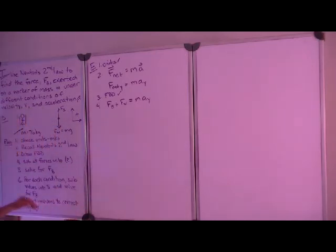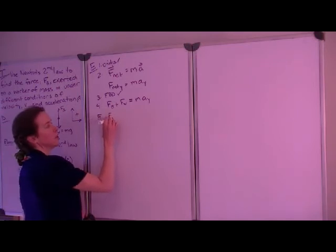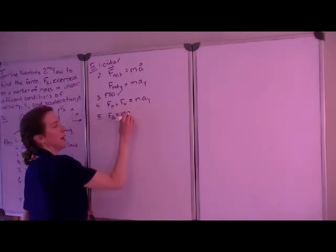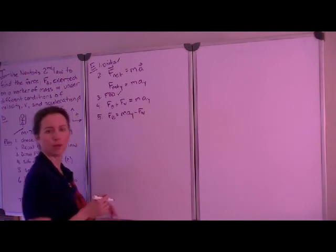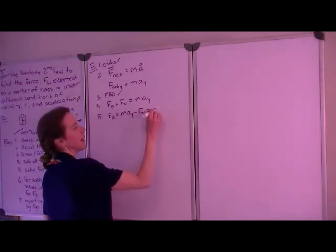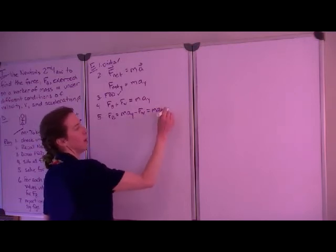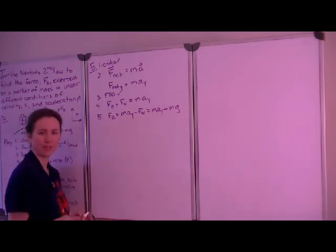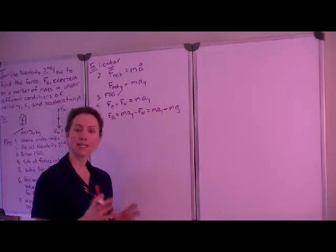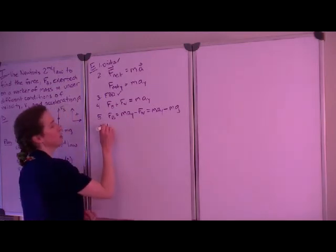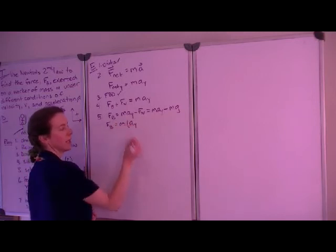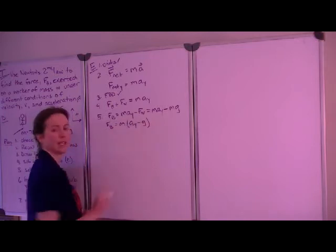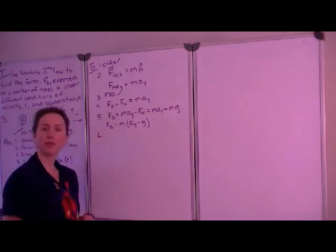Now we want to solve for the force of the bucket on the worker. That is going to be equal to the mass times the acceleration in the Y direction minus the weight of the worker. Substituting for the weight of the worker — mass times gravitational acceleration — that is equal to mass times acceleration in the vertical direction minus mass times gravitational acceleration. We can factor out mass to get the force of the bucket on the worker equals mass times the quantity: acceleration in the vertical direction minus gravitational acceleration. Now we are ready to consider the specific conditions.